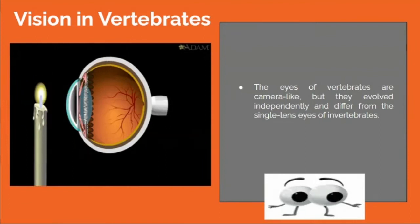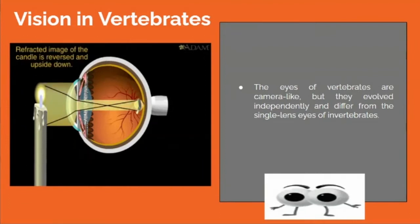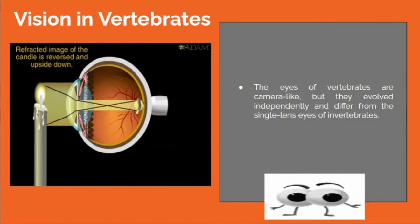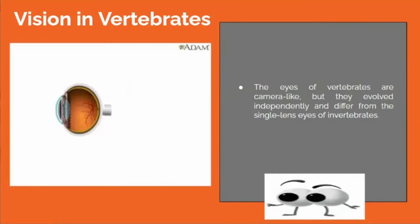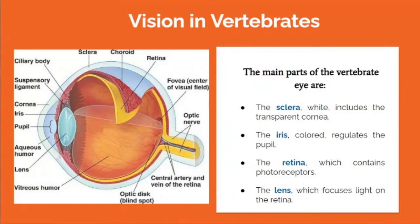Vision in vertebrates: the eyes of vertebrates are camera-like, but they evolved independently and differ from the single-lens eyes of invertebrates. The main parts of vertebrate eyes are the sclera (white), which includes the transparent cornea; the iris (colored), which regulates the pupil; the retina, which contains photoreceptors; and the lens, which focuses light on the retina.